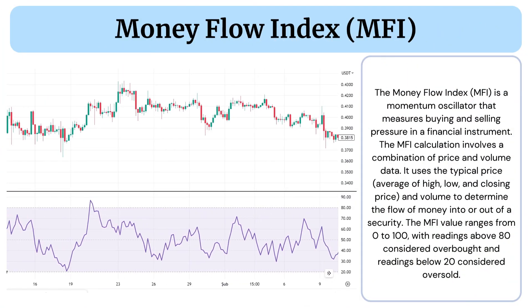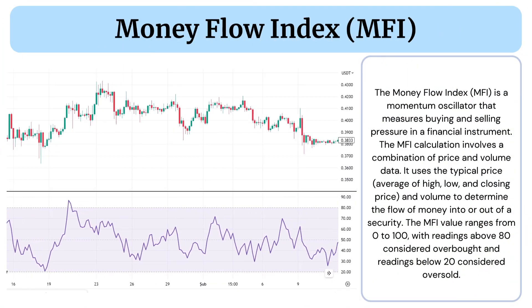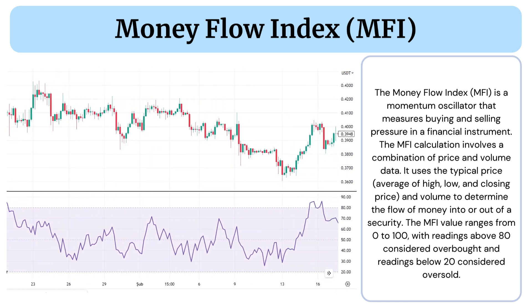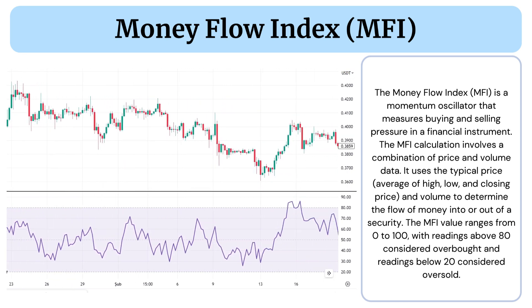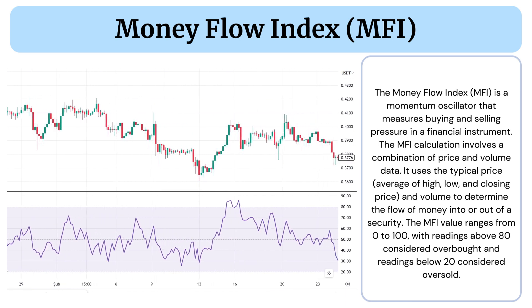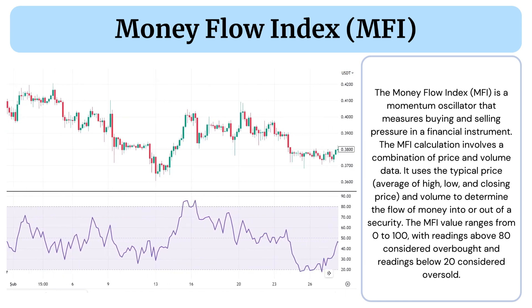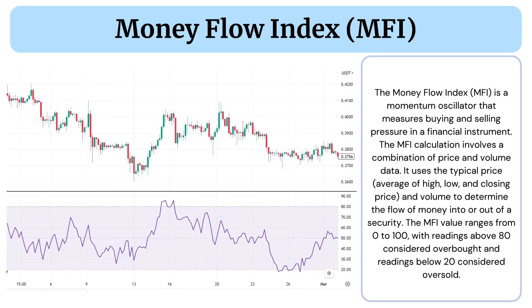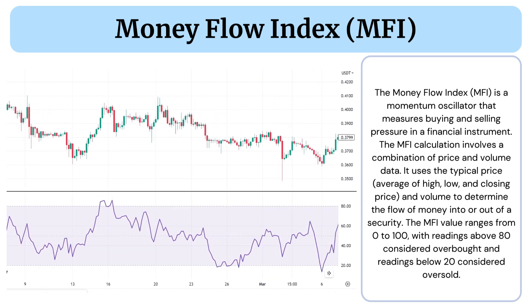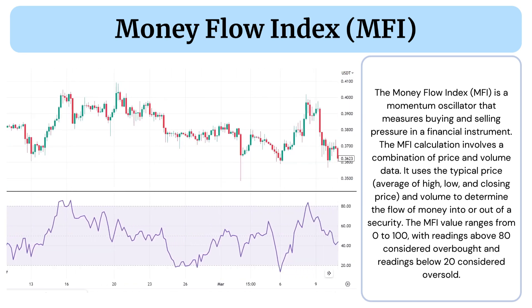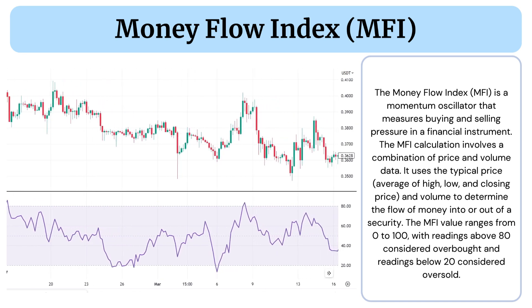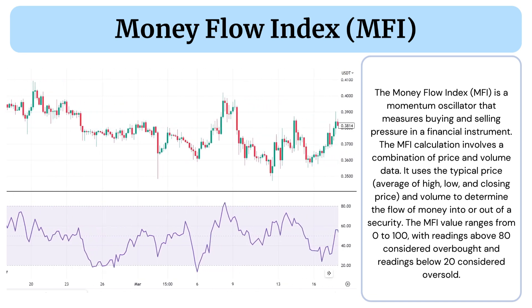The Money Flow Index (MFI) is a momentum oscillator that measures buying and selling pressure in a financial instrument. The MFI calculation involves a combination of price and volume data. It uses the typical price — the average of high, low, and closing price — and volume to determine the flow of money into or out of a security.